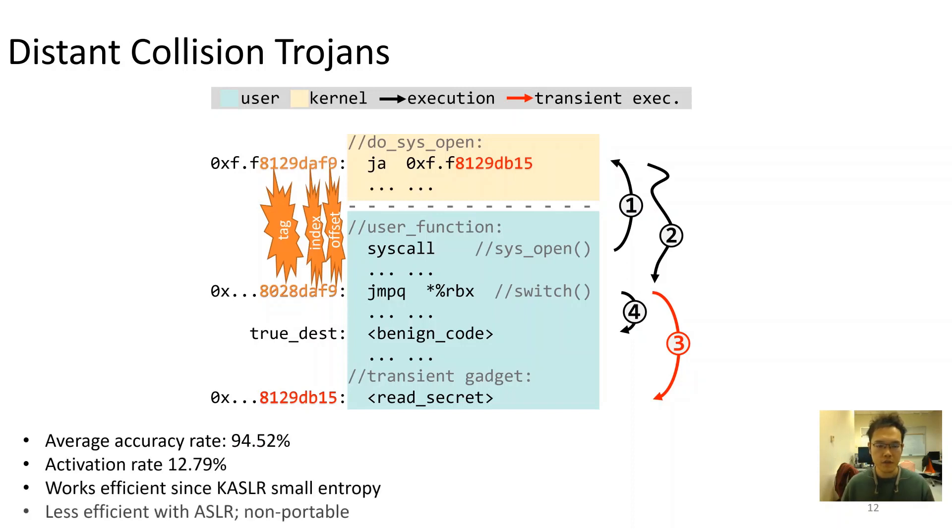In our evaluation, the attack can achieve high accuracy with an acceptable activation rate. The attack works well since kernel address space layout randomization has low entropy. If the writer branch is in user space such as libraries, with regular entropy of user ASLR, the attack may become less efficient.